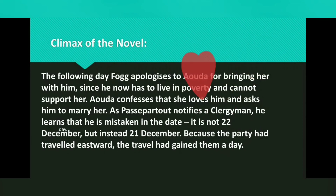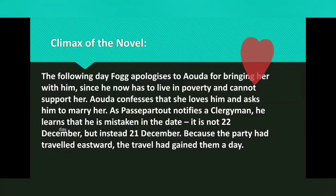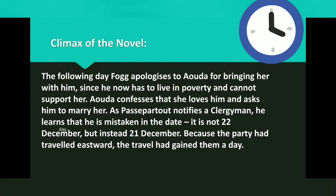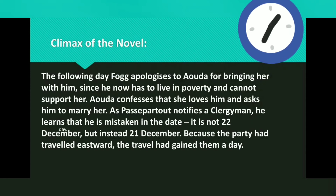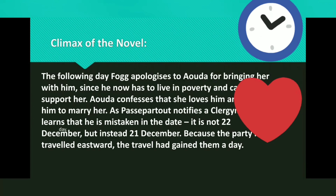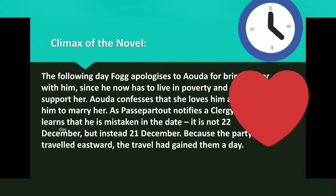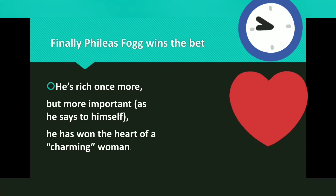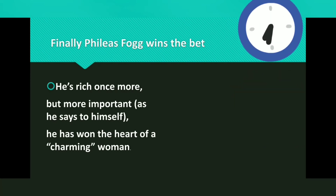Because the party had traveled eastward, the travel had gained them a day. When they traveled eastward, their days were shortened by four minutes for each of the 360 degrees of longitude they crossed. Thus, although they had experienced the same amount of time abroad as people in London, they had seen only 79 days pass. Passepartout informs Fogg of his mistake and Fogg hurries to the Reform Club just in time to meet his deadline, wins the wager, and is rich once more. More importantly, as he says to himself, he has won the heart of a charming woman.